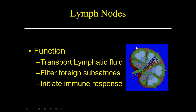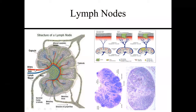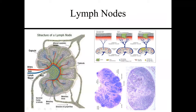I consider the lymph nodes as the garbage bag of the body — anything bad that comes in eventually gets filtered through the lymph nodes. The arteries enter through a hilum and the veins exit through the hilum. The lymphatic vessels bringing all the junk into the lymph nodes enter through the periphery, work their way centrally, and then leave the lymph node through the central hilum.